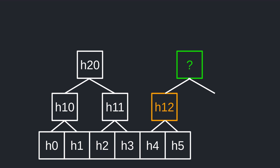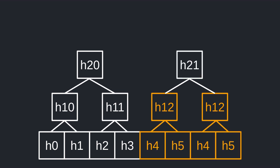So if there are an odd number of hashes, the trick to compute the next level of hashes is to duplicate the last element and then compute the hash of the duplicates. In essence this is like filling the tail end of the array with duplicates so that the length of the array becomes a power of two.